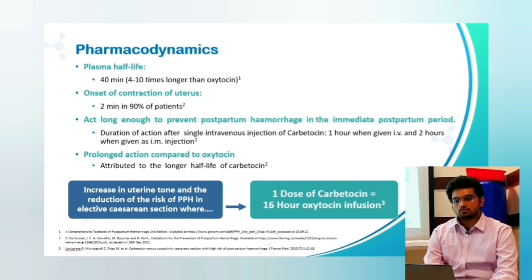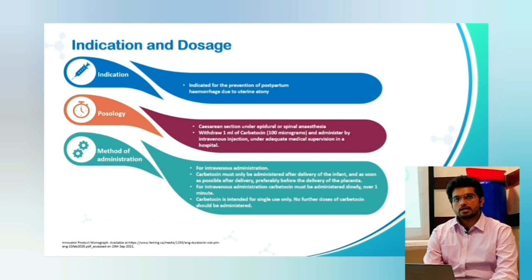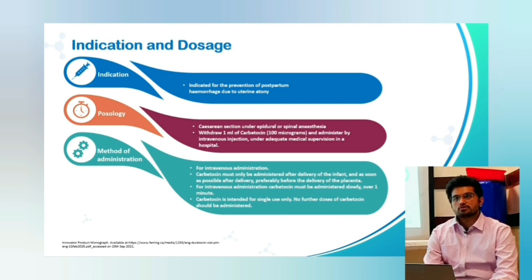Regarding indications and dosage: carbutocin is indicated for the prevention of postpartum hemorrhage due to uterine atony. For caesarean section under epidural or spinal anesthesia, withdraw 1 ml of carbutocin (100 micrograms) and administer by intravenous injection over 1 minute. It must only be administered after delivery of the infant, as soon as possible after delivery, preferably before delivery of the placenta. Carbutocin must be administered slowly over 1 minute intravenously and is intended for single use only — no further doses should be given.